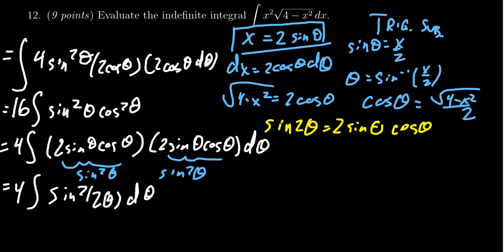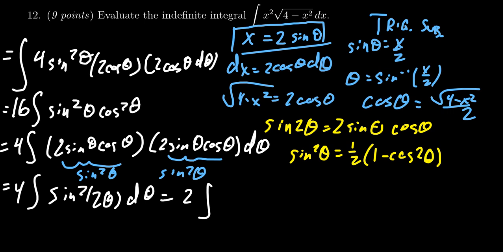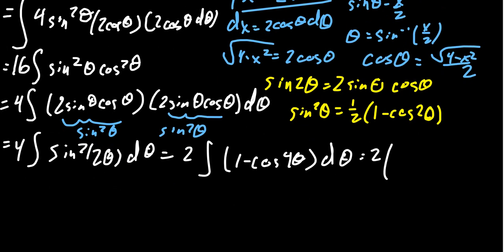Now we have a sine squared, which brings us to our next identity: sine squared theta equals one half times (1 minus cosine of 2 theta). The angle doubles when switching from sine to cosine. The one half combines with the 4 to give us a 2, and the angle goes from 2 theta to 4 theta. So we get 2 times the integral of (1 minus cosine of 4 theta) d theta. Taking the antiderivative gives 2 times (theta minus one quarter sine of 4 theta) plus a constant.